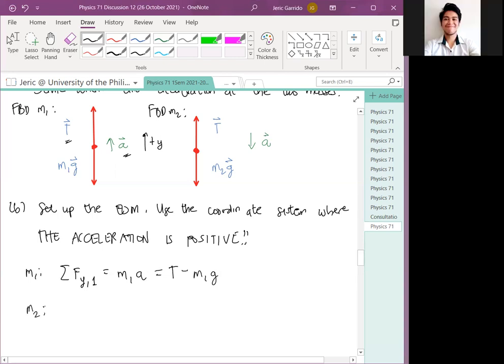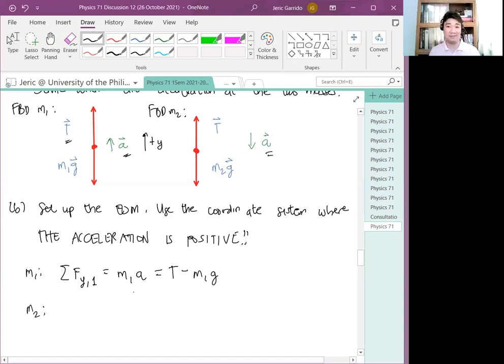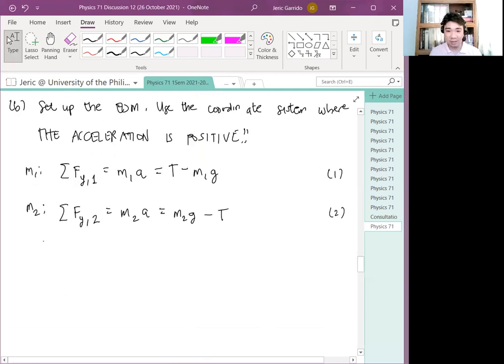What about M2? Here, this is where it differs. Note here, I set my acceleration to be positive. Therefore, what's the positive y direction there? Downward or upward? Downward. Downward, exactly. So you have summation of forces for y on the second object. It's simply still positive. But tension now here, is it still positive or is it now negative? Negative. It's now negative. Therefore, I have M2 G minus T. Let's say this is equation 1 and this is equation 2.